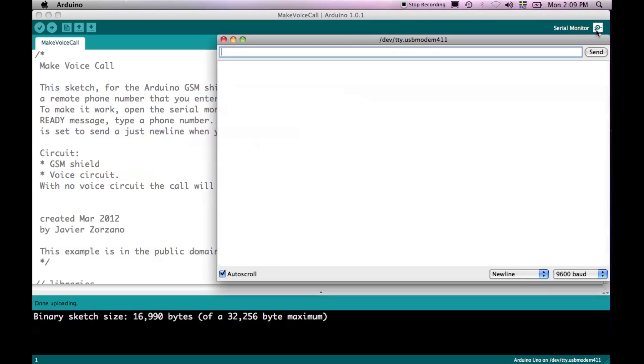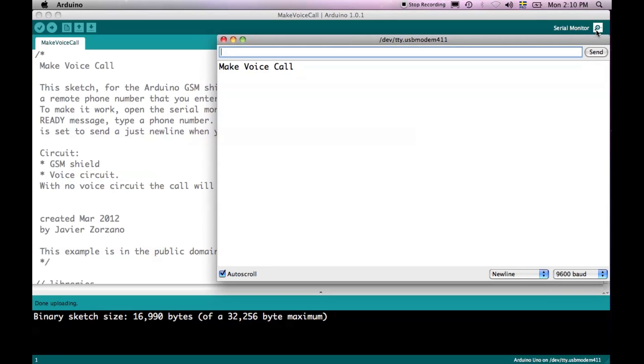Once the program has been uploaded to the board, the only thing you need to do is to open the serial port monitor in order to start interacting with it. Remember to set up the new line option, because it's what the shield will be using to determine that you've finished typing in a string.